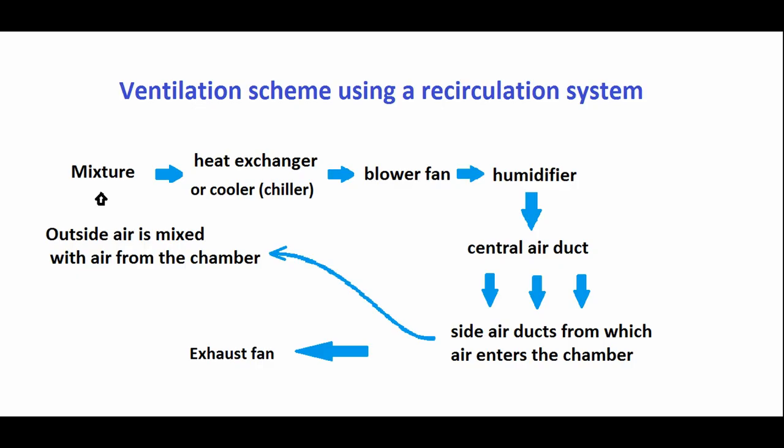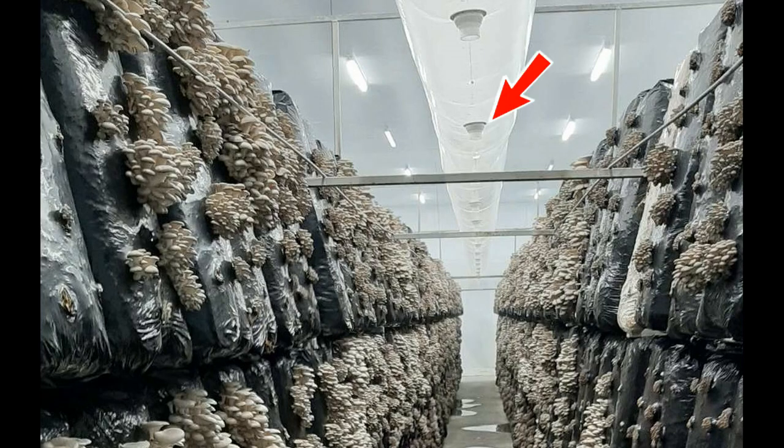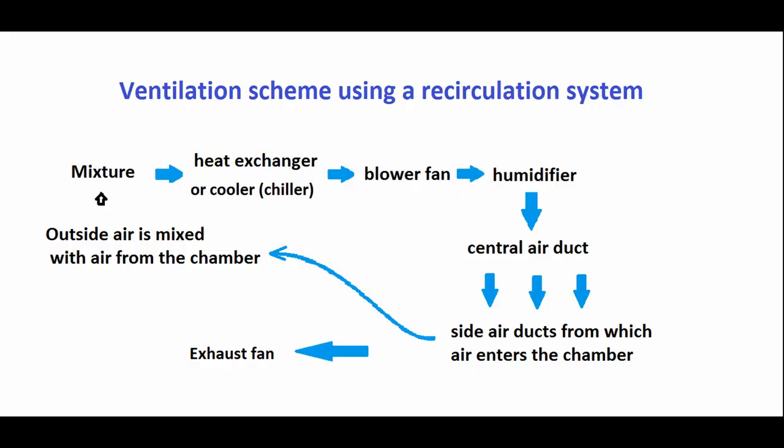Side air ducts diverge from the central air duct. These air ducts have nozzle cups. Through them, air blows into the floor and takes carbon dioxide and moisture from the mushrooms. Then part of the air flow is returned to the recirculation system. The second part of the flow is brought out by the axial fan of the hood. The amount of air that comes out through the hood should be equal to the amount of air that came in from the street.